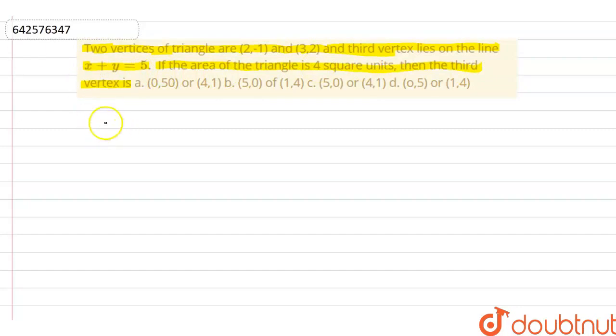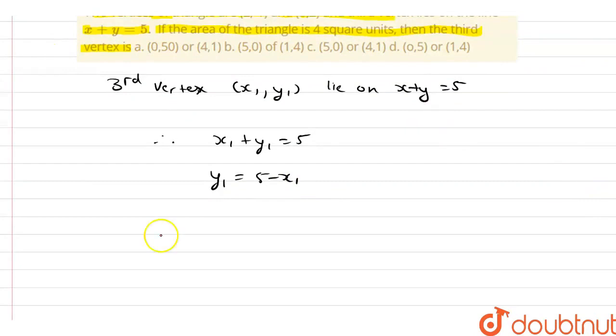According to the question, the third vertex (x1, y1) lies on the line x + y = 5. Substituting the values, we get x1 + y1 = 5. From here, y1 = 5 - x1. As per the given question, point C has coordinates (x1, 5 - x1).